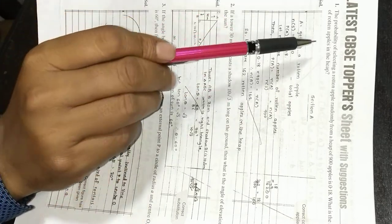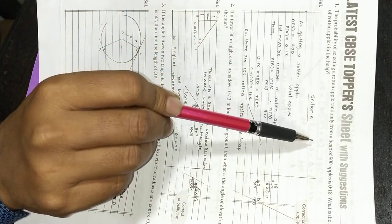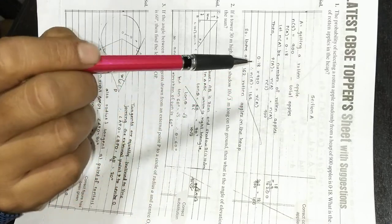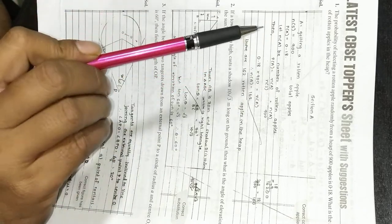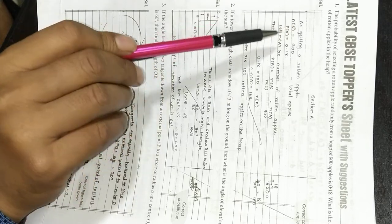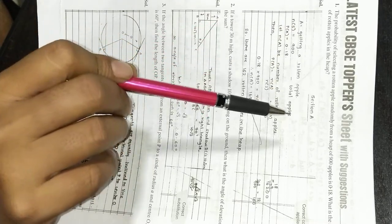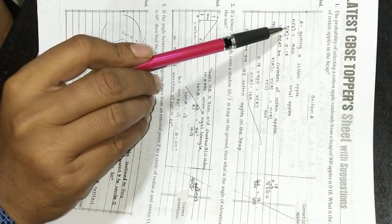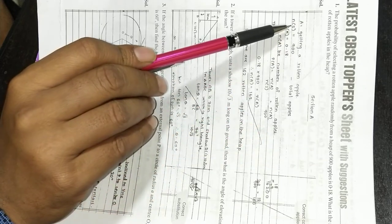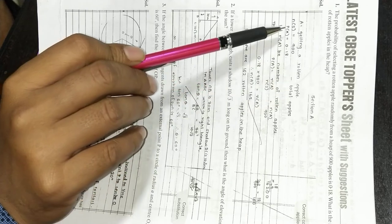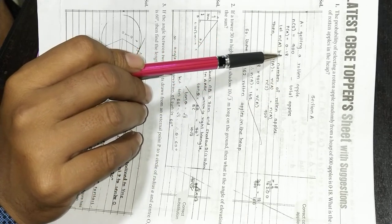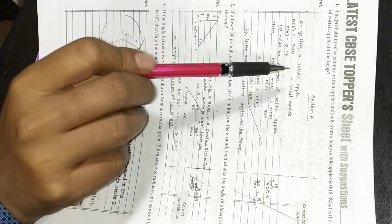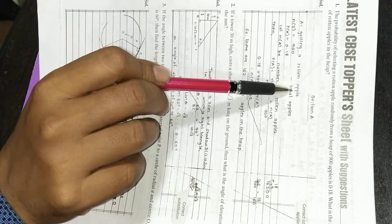Now in section A, the first question was: the probability of selecting a rotten apple randomly from a heap of 900 apples is 0.18. What is the number of rotten apples in the heap? Now all students know that this question is from probability. First of all they assumed let A be getting a rotten apple. I am going to explain only the first question, later on you can go through your own. So first they assumed A as getting a rotten apple. Now total number of apples is denoted as N equals 900 total apples. Then probability of A is given as 0.18. Then they assumed let n be the number of rotten apples. Then probability formula is applied. So you can see for one mark question also they have made it properly step by step.